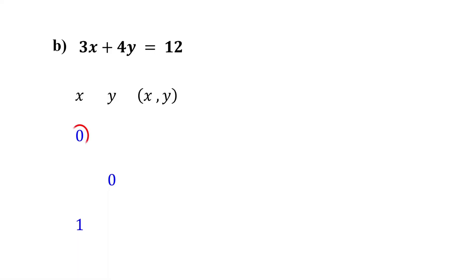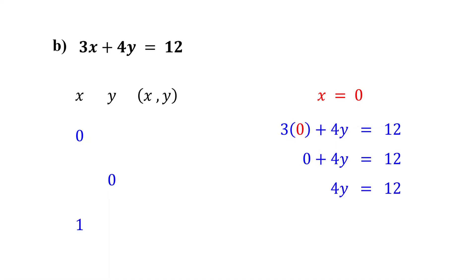First, we have x equals 0. Substitute 0 for x and solve for y. 3 times 0 is 0. Then, divide both sides by 4; these cancel out, and 12 divided by 4 equals 3. So, when x equals 0, y equals 3. Therefore, (0, 3) is one solution to the equation.